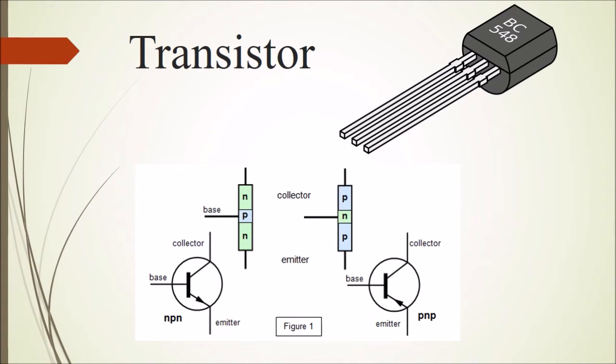Transistors: a semiconductor device having three electrical contacts named collector, base, and emitter. Current flowing between collector and emitter can be regulated by changing the potential difference between emitter and base.